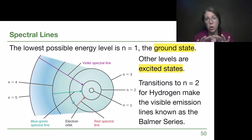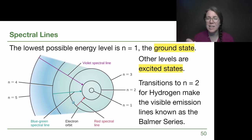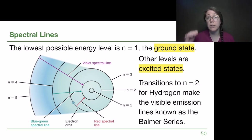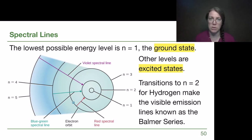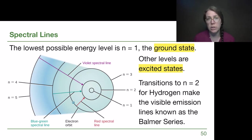In other countries they call the lowest level the ground floor, and one flight up becomes their first floor. The excited states have that same kind of offset numbering: n=2 would be called the first excited state — that's the first jump away from the ground state. The transitions from higher energy levels down to n=2, the first excited state, are called the Balmer series for hydrogen.